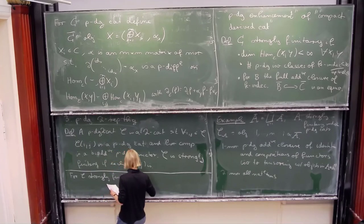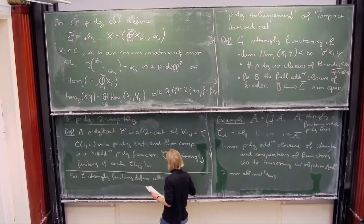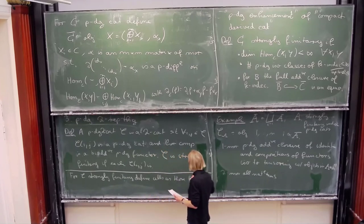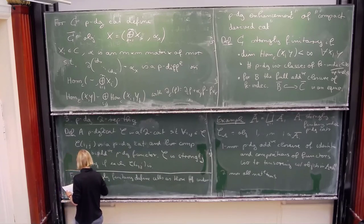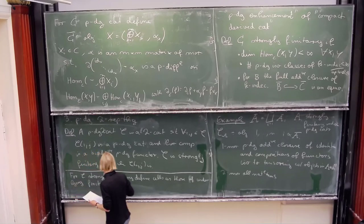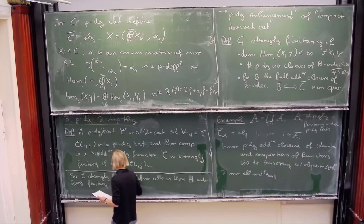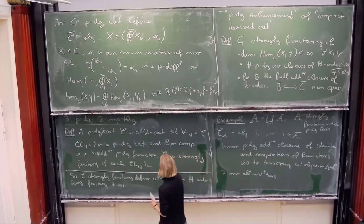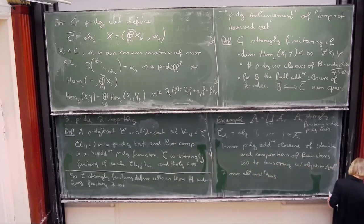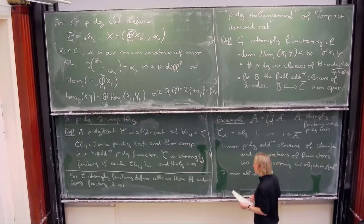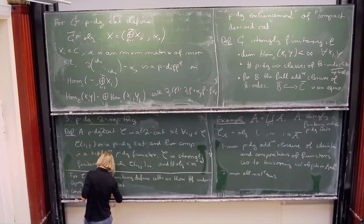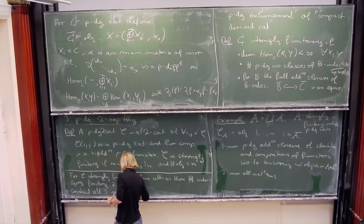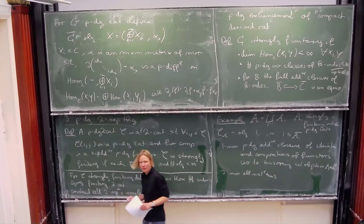Similarly to before, we can define cells as those of the underlying finitary two-category — when we forget about the differential we obtain a finitary two-category. We can also construct cell two-representations, though more complicated because of the overline construction. The precise construction is in our paper. The theorem is: for C_A, assuming the radical of this category is closed under the differential, the cell two-representation C_L of a left cell L in J is given by C_L(i) equals A_i with the natural action.